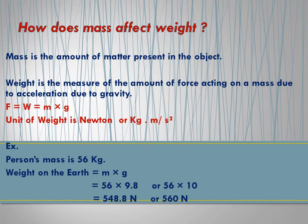Now let us consider one example. In that example, we consider a person's mass is 56 kg. Now let us see how to calculate the weight of that person on the Earth. It is equal to mass into acceleration due to gravity, that means M into G. Mass value is given as 56 kg, and G value we know as 9.8 meter per second square. Sometimes it is considered as 10 meter per second square.